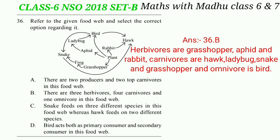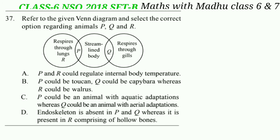Now question 37. Refer to the given Venn diagram and select the correct option regarding animals P, Q and R. According to the flowchart, P should respire through lungs and have a streamlined body, Q should have a streamlined body and respire through gills. So P could be a bird, R could be a mammal and Q could be a fish. The answer will be option: P and R could regulate internal body temperature.